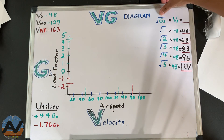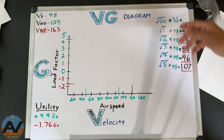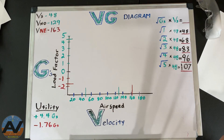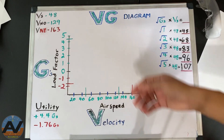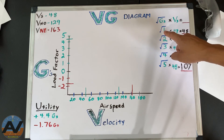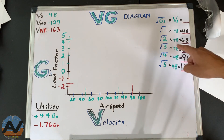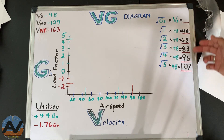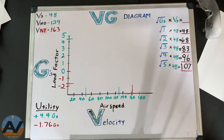We have our Gs on the Y-axis: 1, 2, 3, 4, 5. I didn't go past 5 because of our utility category limit - there's no point going to 6 since we can't go past 4.4 Gs anyway. The square root of 1G times the stall speed is 48. The square root of 2 times 48 is about 68. These are rounded-off numbers. So let's go ahead and plot our speeds on our VG diagram.